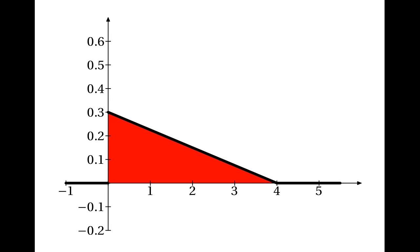What about this function? Could it be a probability density function? Again, we need to find the total area and check whether it equals 1. This time we've got a trapezium, and the area is the average of the parallel sides multiplied by the perpendicular distance between them: the average of 0.1 and 0.4, multiplied by 4. That does give us the answer 1, so this could be a probability density function.